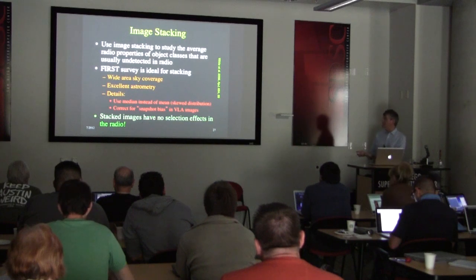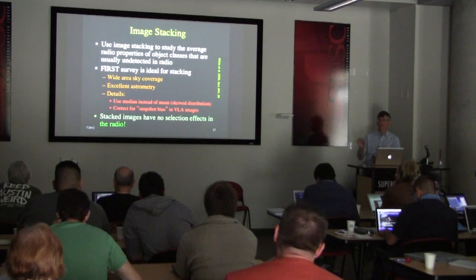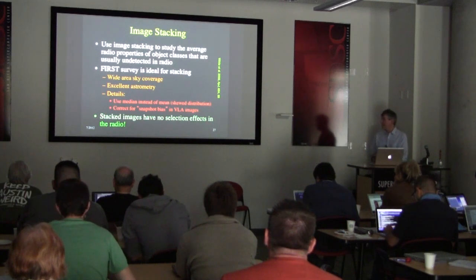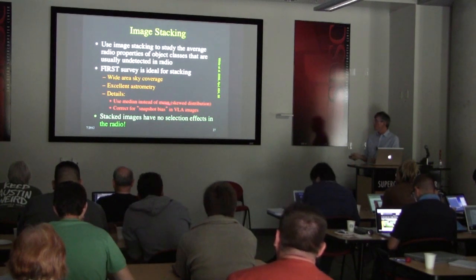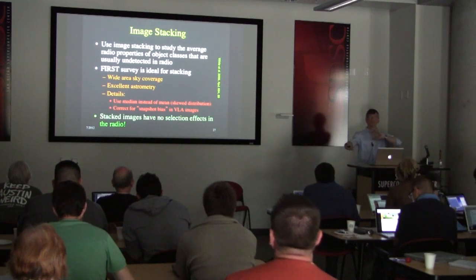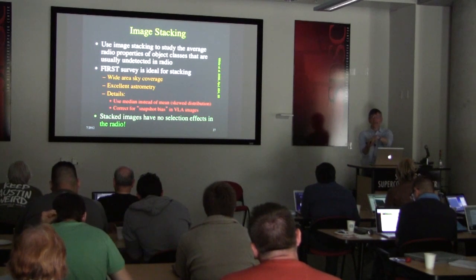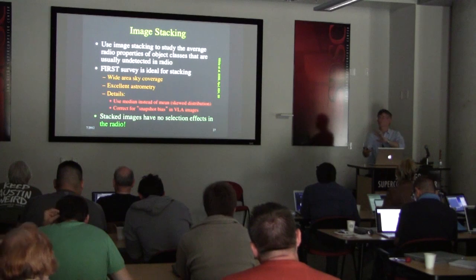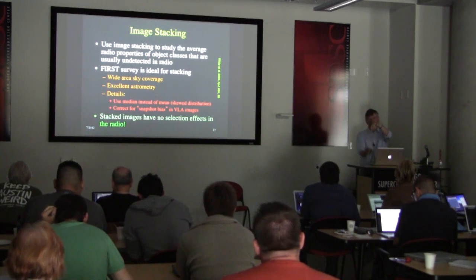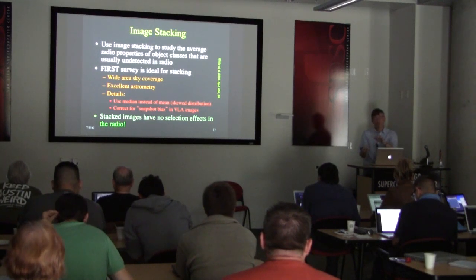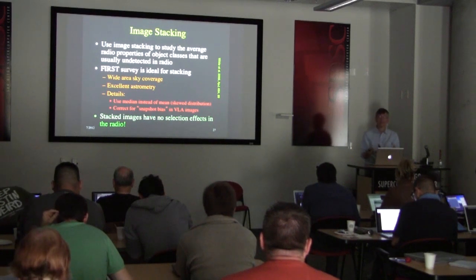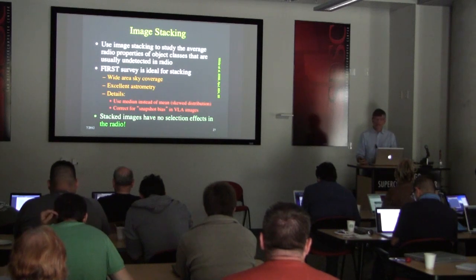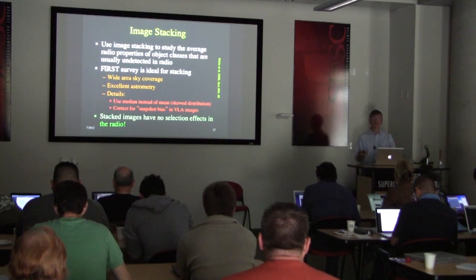The FIRST survey is great for stacking: it has wide sky area and very good astrometry, which you need to accurately match catalog positions to images. When calculating from a stack, we use the median rather than the mean. If a random bright source appears near one of the positions, it creates a big bump in the mean but not in the median. The median is far more robust — you can do proper median statistics, calculate noise on the median, and compute upper and lower limits. It's much less sensitive to outliers.